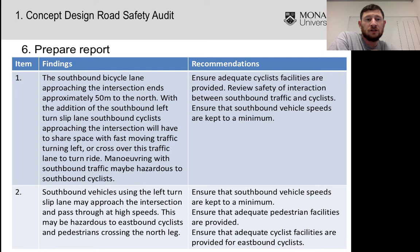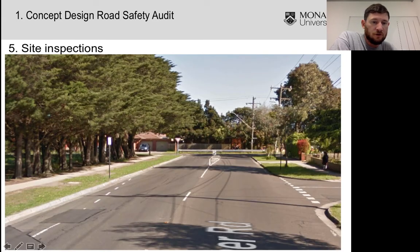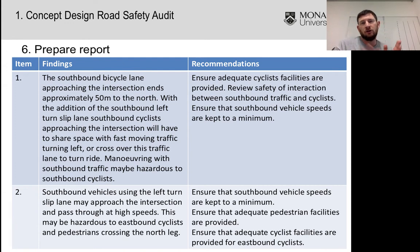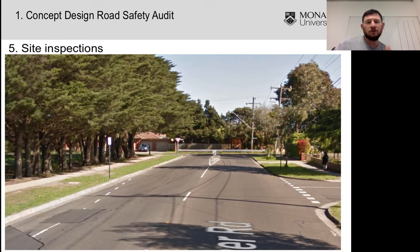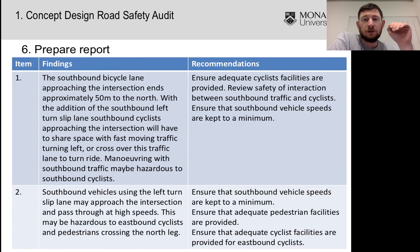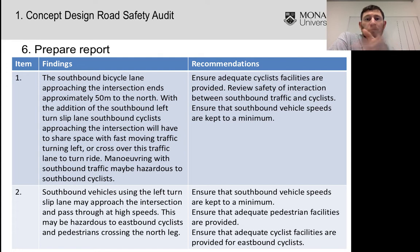Finding number one: the southbound bicycle lane approaching the intersection ends 50 meters to the north. You can see it in the bottom left of the photo — that's the bike lane, and it ends before the intersection. With the addition of the left turn slip lane, southbound cyclists will have to share space with fast-moving traffic, creating a potential weaving hazard. Traffic going south will now travel through the intersection at relatively high speed — around 20 to 30 km/h — compared to current conditions where traffic slows almost to a stop to turn the corner. The recommendation is to ensure adequate cycle facilities in the design and to manage southbound vehicle speeds.